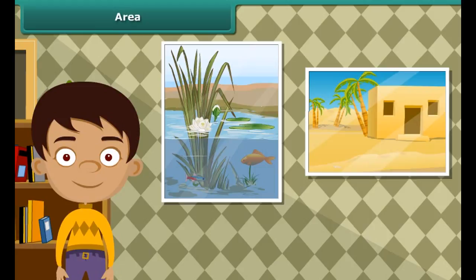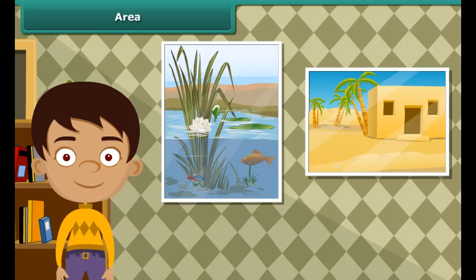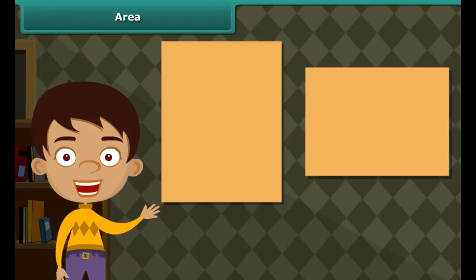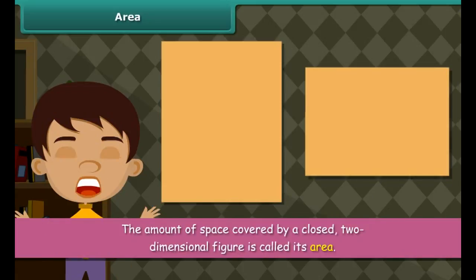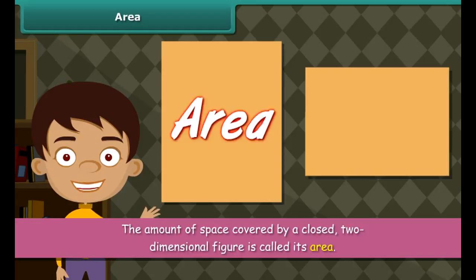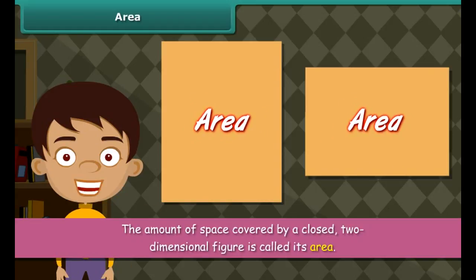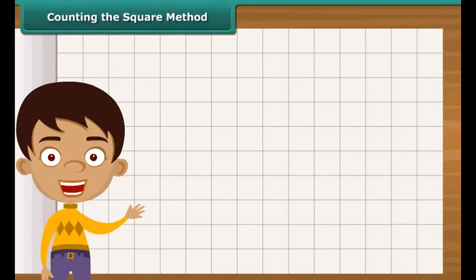Take two paintings of different sizes and compare them. The amount of space covered by the two paintings will be different because the lengths and breadths of the two paintings are different. The amount of space covered by a closed two-dimensional figure is called its area.